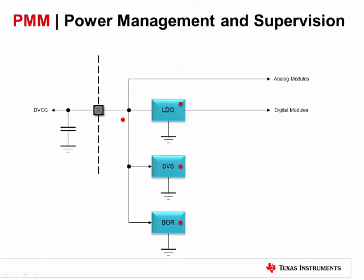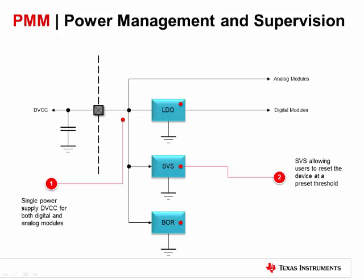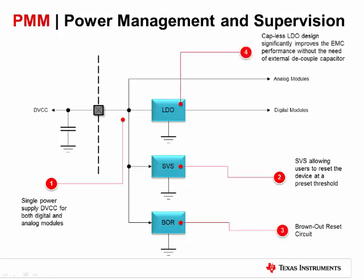Now let's talk about power management. The power management module on this device is similar to the FR5969 with a couple of differences. The PMM has a single supply line for both digital and analog modules. There is a built-in supply voltage supervisor that will cause the device to reset at a preset threshold, and there is also brown-out reset circuitry similar to other MSP430s. There is an integrated LDO for generating the core voltage. You can run at any frequency all the way to 1.8 volts, with no configuration of different core voltage levels, and no external capacitor needed — saving cost and board space.